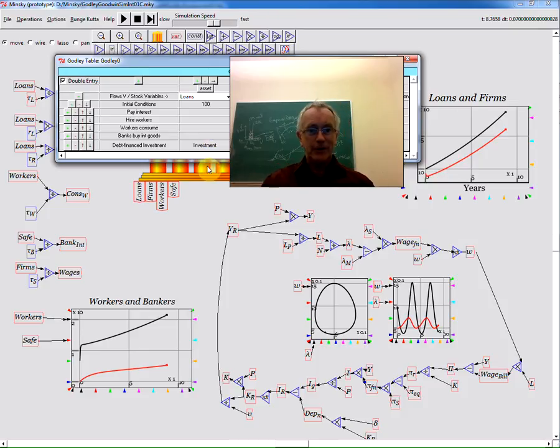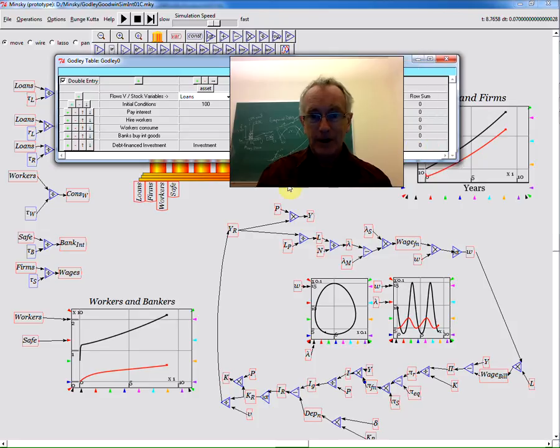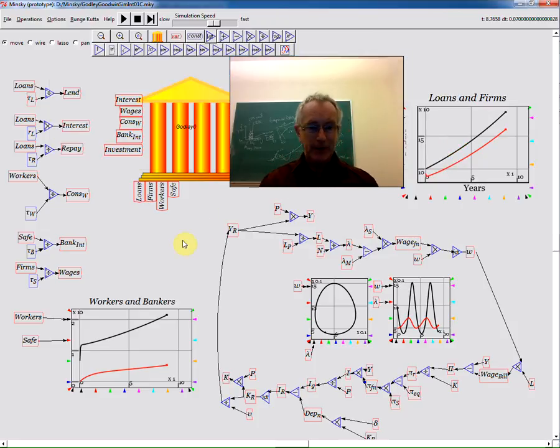So that's all there is to do in terms of setting up the godly table to make sure I've got the financial flows covered. That's one great advantage in this approach over the flow chart. I'll make a little video shortly what it looks like to do even the simplest of the godly tables using the flow chart approach. So I've got investment in there.